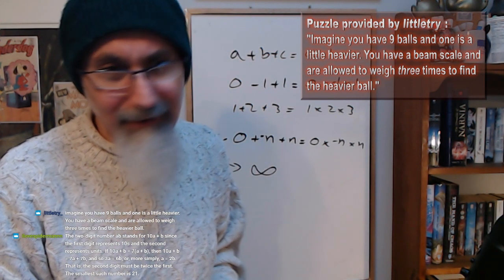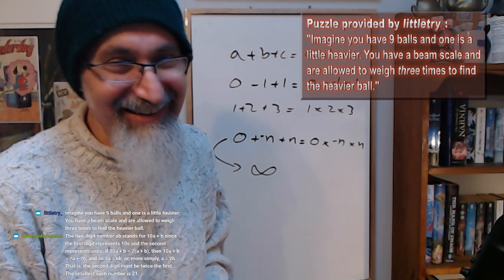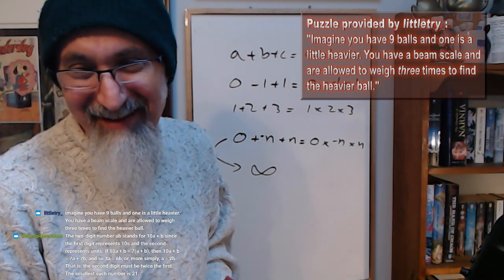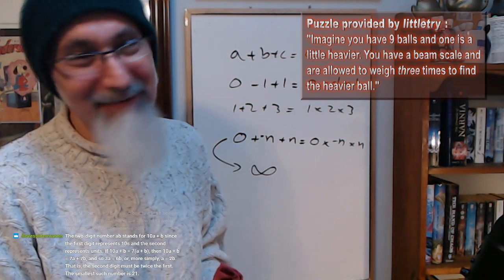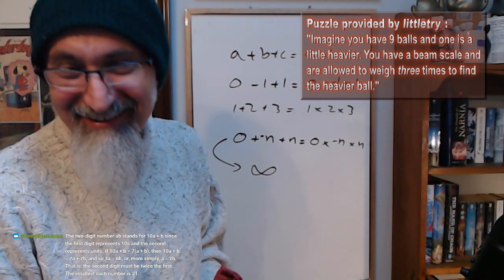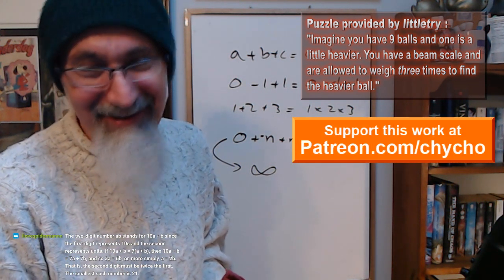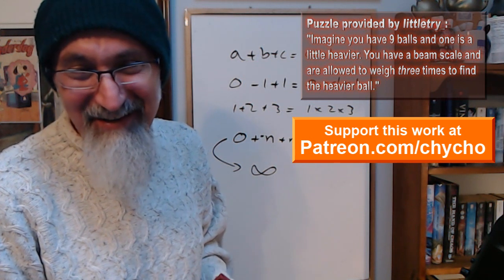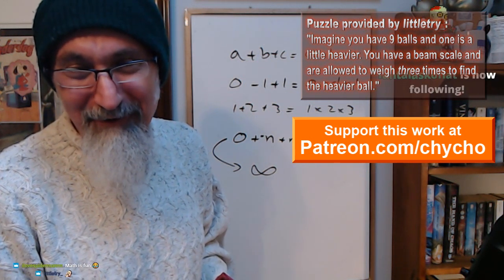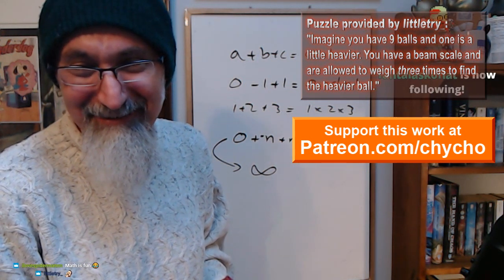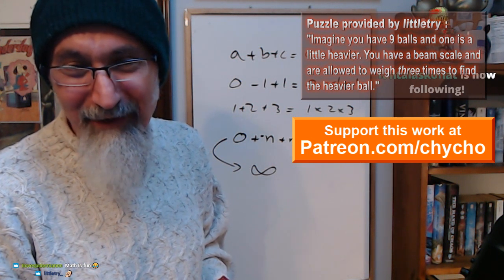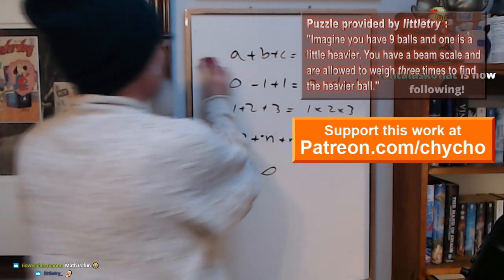Imagine you have nine balls and one is a little heavier. You have a beam scale and are allowed to weigh three times to find the heavier ball. Let's check this out.